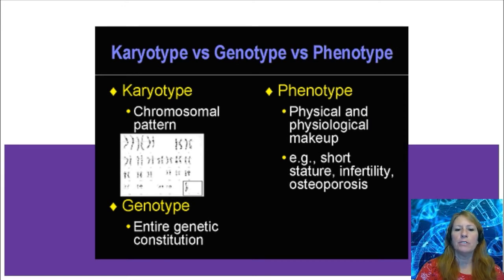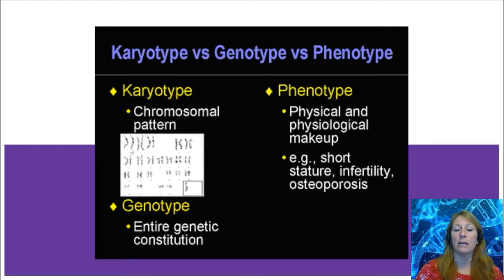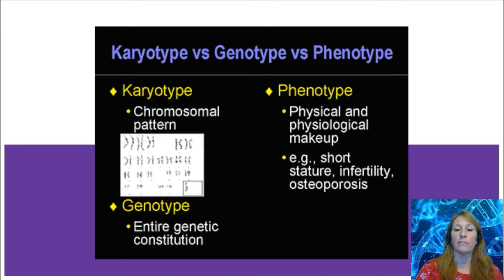Karyotype, genotype, and phenotype are the next terms. A karyotype is what scientists use to map out chromosomes, mainly to detect disorders. Chromosomes occur in pairs, so scientists extract DNA from a cell, lay out the chromosomes, and match them based on overall length, centromere location, and banding patterns. If a location is missing a chromosome where there should be two, or has three or four instead of two, they begin investigating disorders.